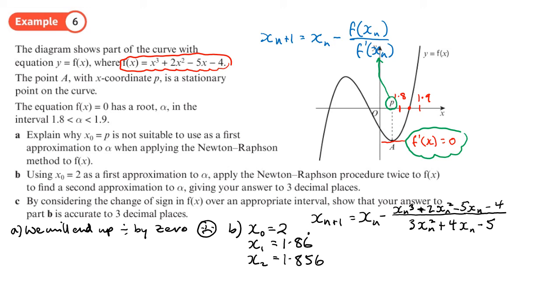Part c is asking us, by considering a change of sign over an appropriate interval, show that your answer to b is correct to three decimal places. So this is where I do f of the upper bound and lower bound of that number, or you can be closer than the upper and lower bound. So f of the upper bound 1.8565 and then f of the lower bound 1.8555.